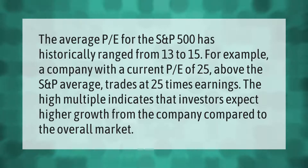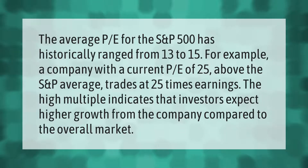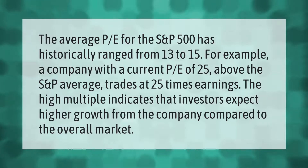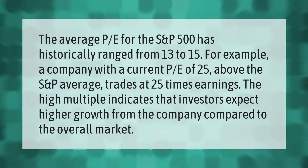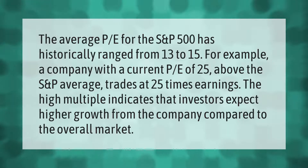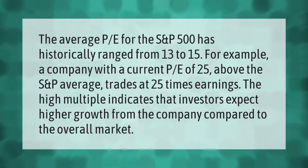The average P/E for the S&P 500 has historically ranged from 13 to 15. For example, a company with a current P/E of 25 — above the S&P average — trades at 25 times earnings. The high multiple indicates that investors expect higher growth from the company compared to the overall market.